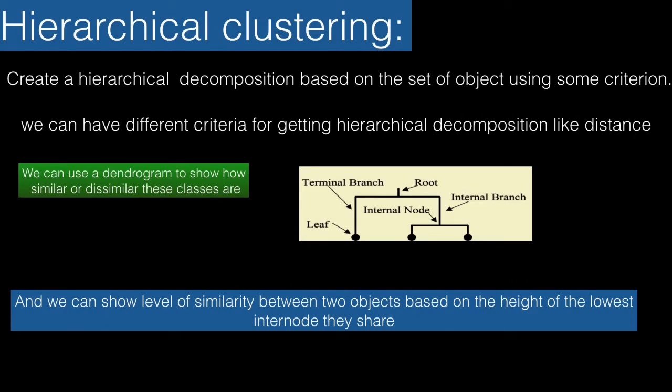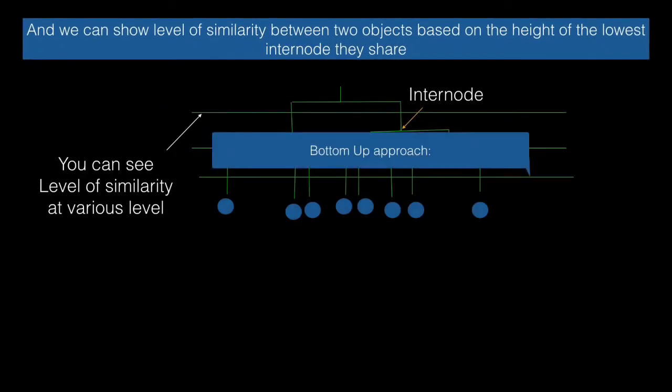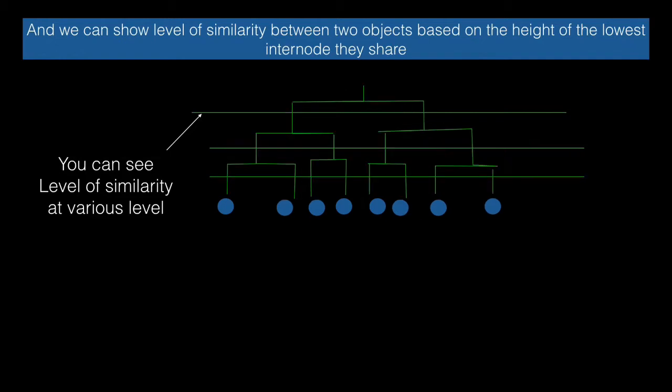Now let's see what is the dendrogram. You'll use this to see the level of similarity. The similarity in the dendrogram is shown by the height of the lowest internal node. In the starting, every object belongs to a cluster, and as we go up, we join two clusters into one based on how similar they are.